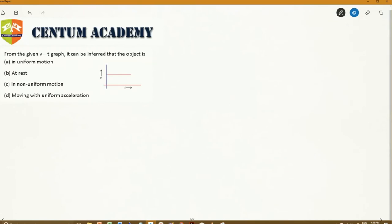Hi, in this question a VT graph has been given and we have to draw inferences from this VT graph. What does this VT graph represent?